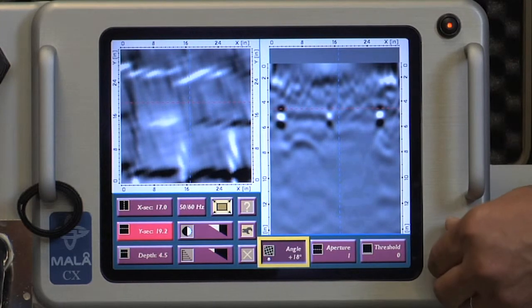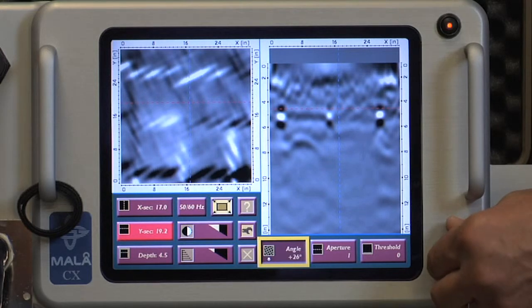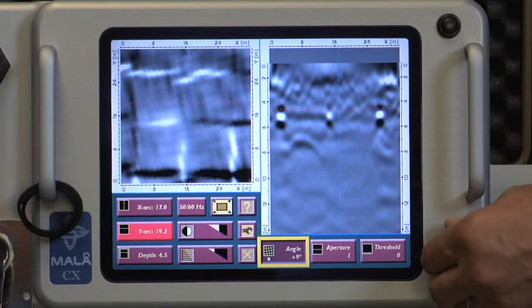Rather than move the mat and begin the data collection process over again, the operator can simply enter the angle and the CX automatically corrects the image distortion.